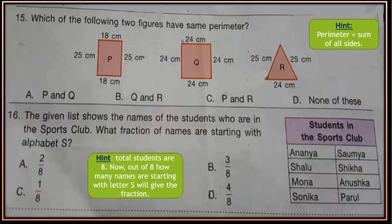Question 15: Which of the following two figures have the same perimeter? Look at the figure — all sides are given. P, Q and R are three figures whose sides are given. Perimeter is the sum of all sides, so calculate the sum for each and then choose which two figures have the same perimeter.